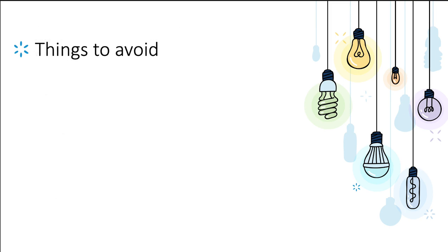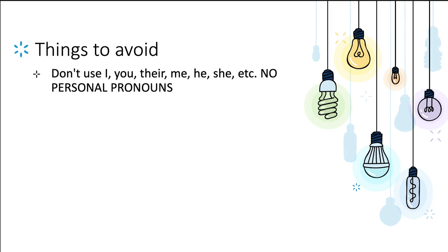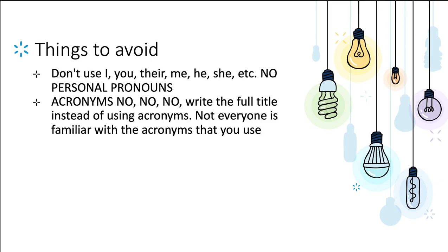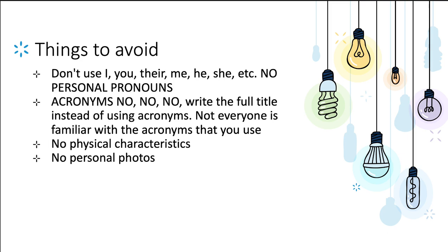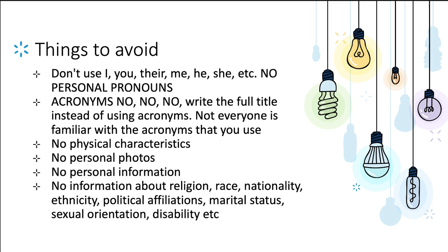Things to avoid in your CV: never start with personal pronouns — I, you, they, me. Don't use acronyms; don't assume the person reading your CV is aware of all organizational acronyms in Canada. Don't include any physical characteristics, pictures, height, background, or religion — no personal photo. No personal information related to race, nationality, ethnicity, political affiliation, marital status, sexual orientation, or disability. A CV is an objective document.